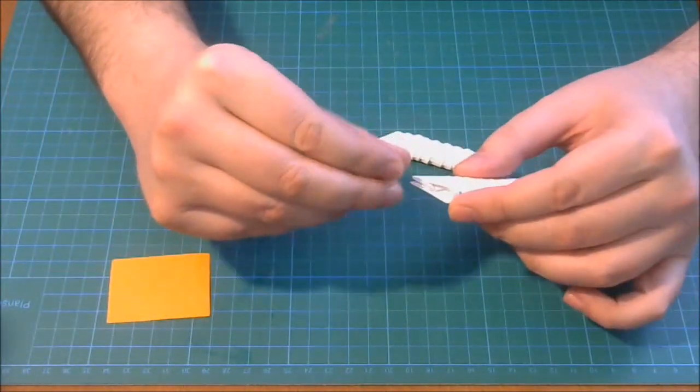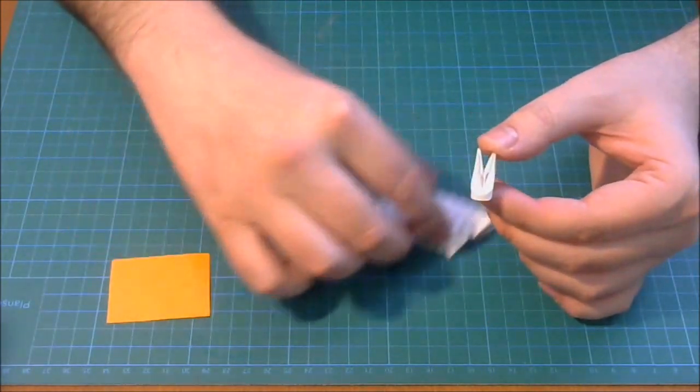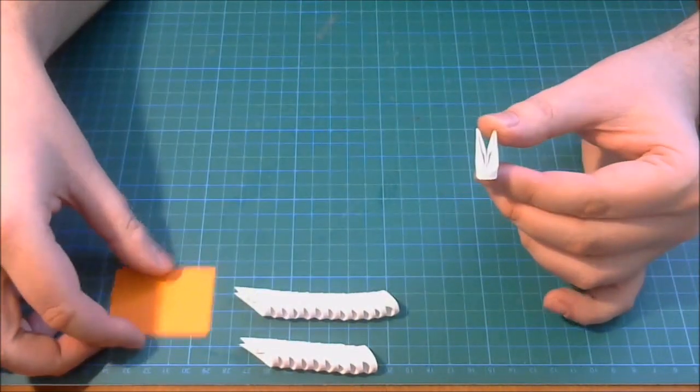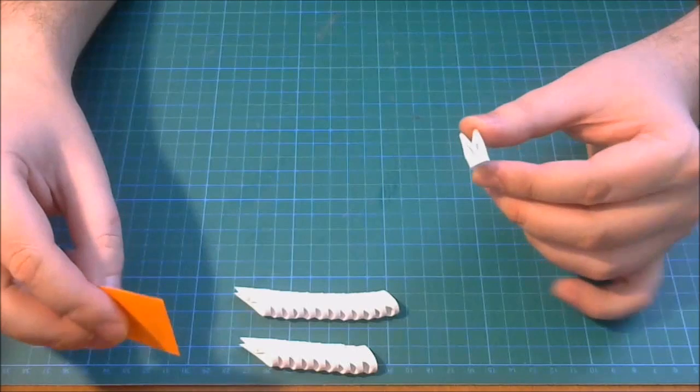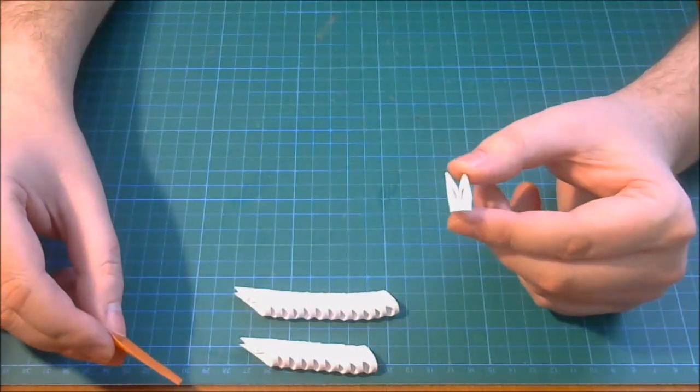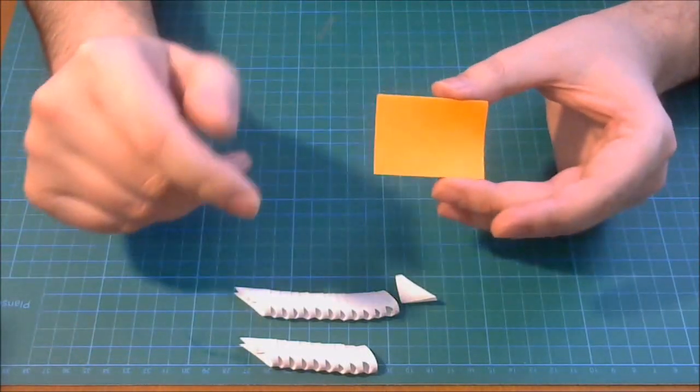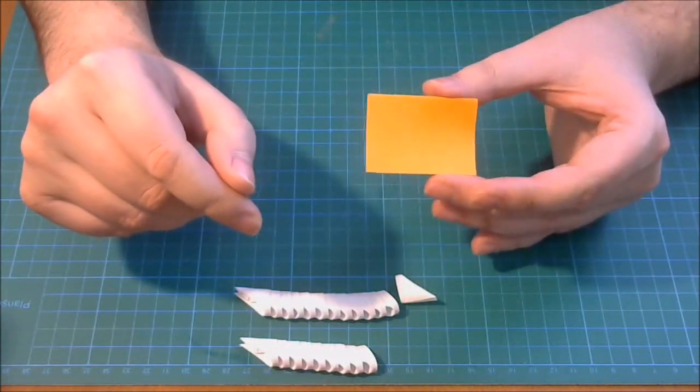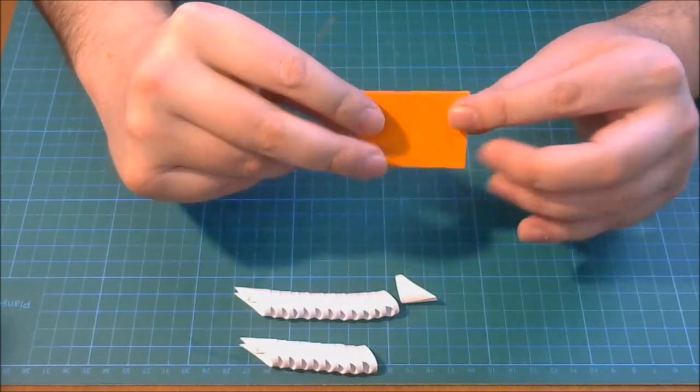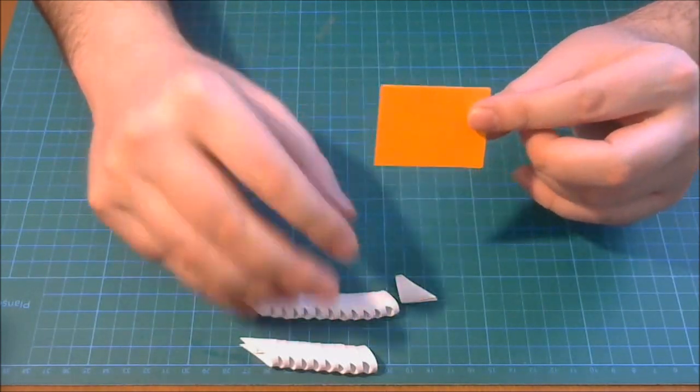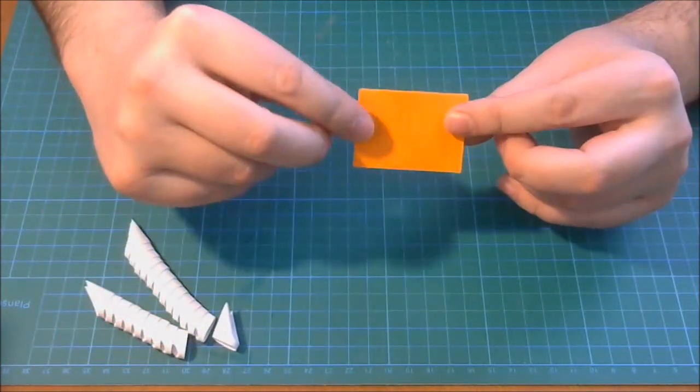For this model we need white pieces and these are large 3D origami pieces. You will obtain 32 pieces like this from an A4 piece of paper. I use normal printer paper 80 grams per square meter. If you want to learn more about 3D origami paper please look in the description of the video.